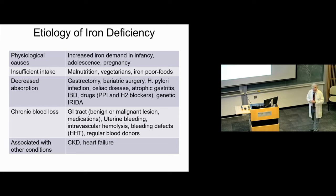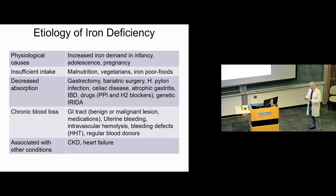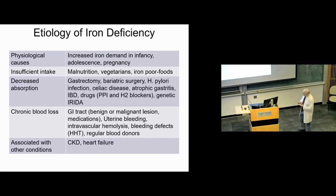The causes of iron deficiency include physiologic causes such as the demands of pregnancy, adolescence with rapidly increasing muscle mass, or infancy when growth spurts can render someone iron deficient. There may be poor intake from malnutrition or vegetarian-based diets, where non-heme iron is more difficult to absorb from vegetable fibers than from meat. Chronic blood loss is what we often think about in adult medicine and hematology as the primary cause of iron deficiency.